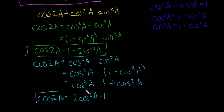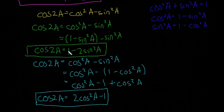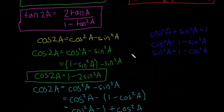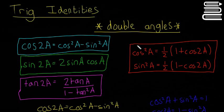Those two formulas aren't in the formula book, so it's best if you can derive them. It's not too hard to learn how to do that — it's easier than trying to memorize them directly, because it's easy to get confused between whether it's 1 minus 2 sine squared or 2 cos squared a minus 1. So they're not too hard to prove. In the next video we're going to look at some examples of using these double angle trigonometric identities.